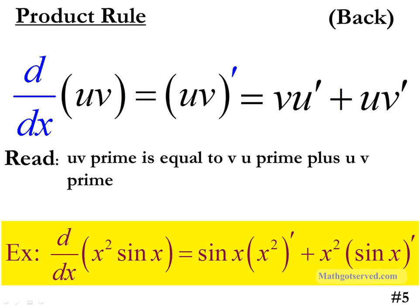Let's apply it to an example: d/dx of x squared times sine x. Do you see two functions here? We have the power function x squared and the trig function sine x. The function that comes second is v — think about alphabetical order, u comes before v — so the first function is u and the second is v. Applying the product rule, we have v, the second function, times u prime, the derivative of the first, plus u, the first function, times the derivative of the second. We haven't gone over the differentiation rules for trig functions so I'll stop here just to illustrate how the product rule can be applied.